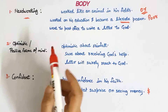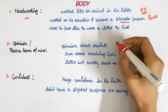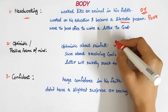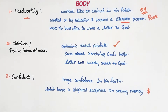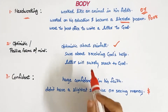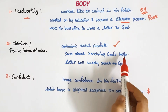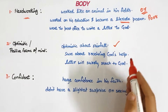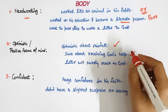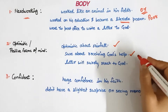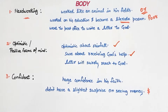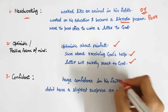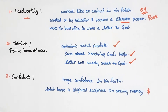Next point: optimistic — how was Lencho a person with a positive frame of mind? He was very optimistic about rainfall initially; he was sure that rain would come. He was also sure about receiving God's help — when all his crops were destroyed, he was still confident that God's help would come to him. Furthermore, when his crops were ruined, he wrote a letter to God without any address, and even then he was sure that the letter would surely reach God.